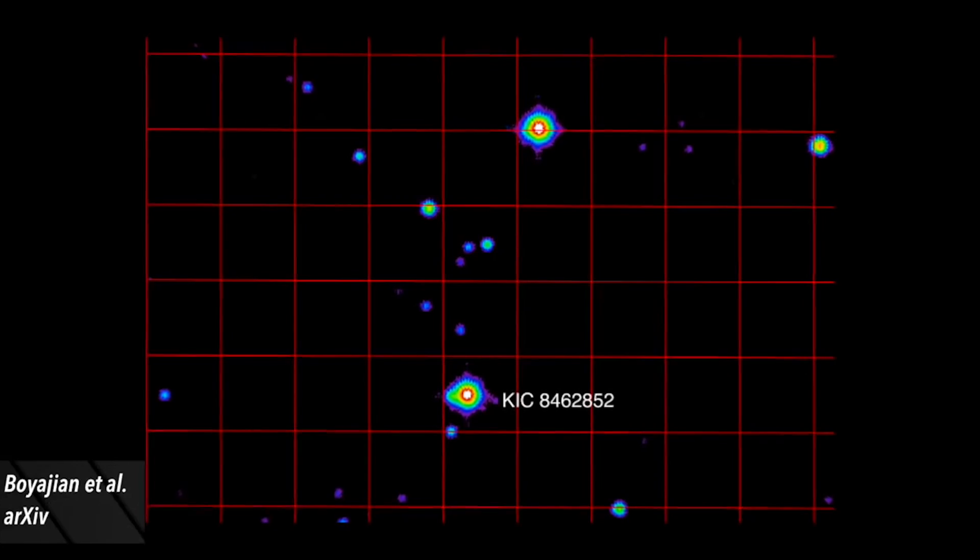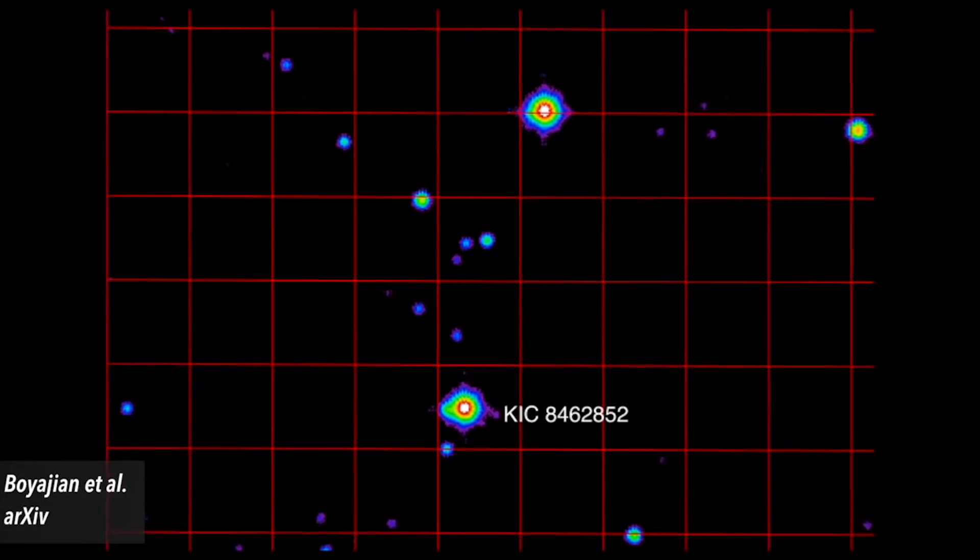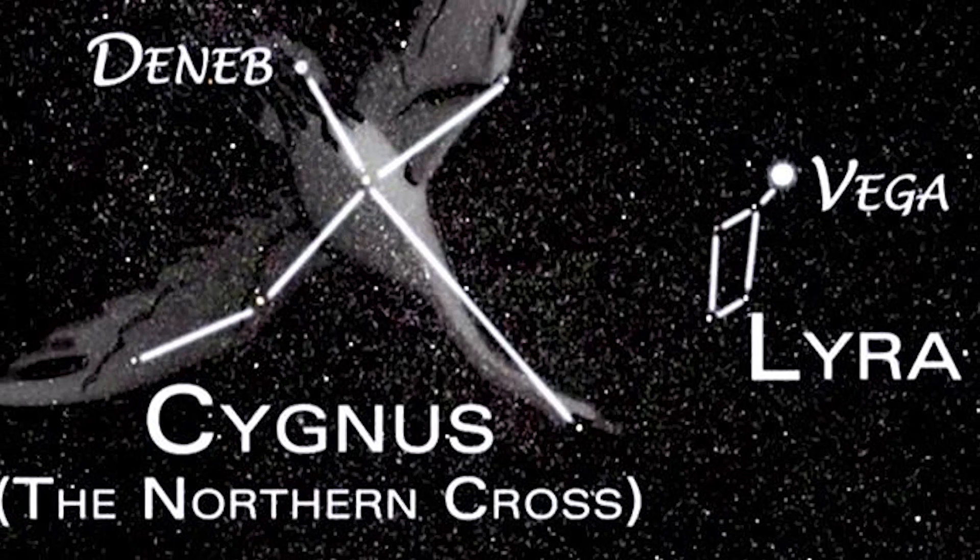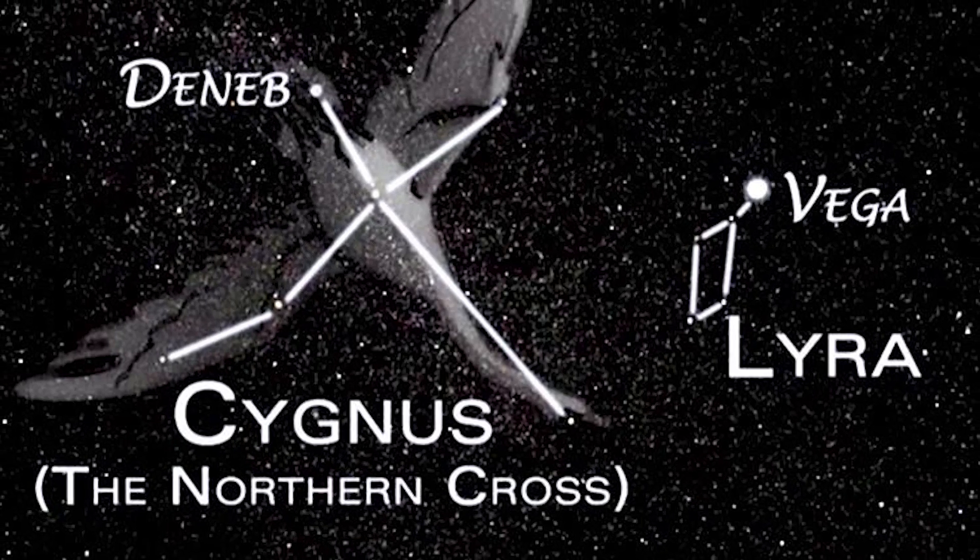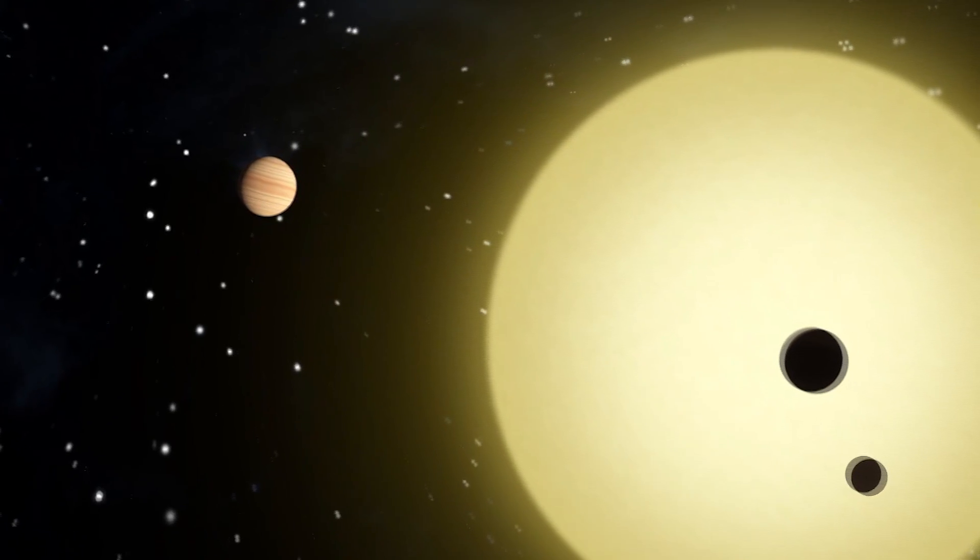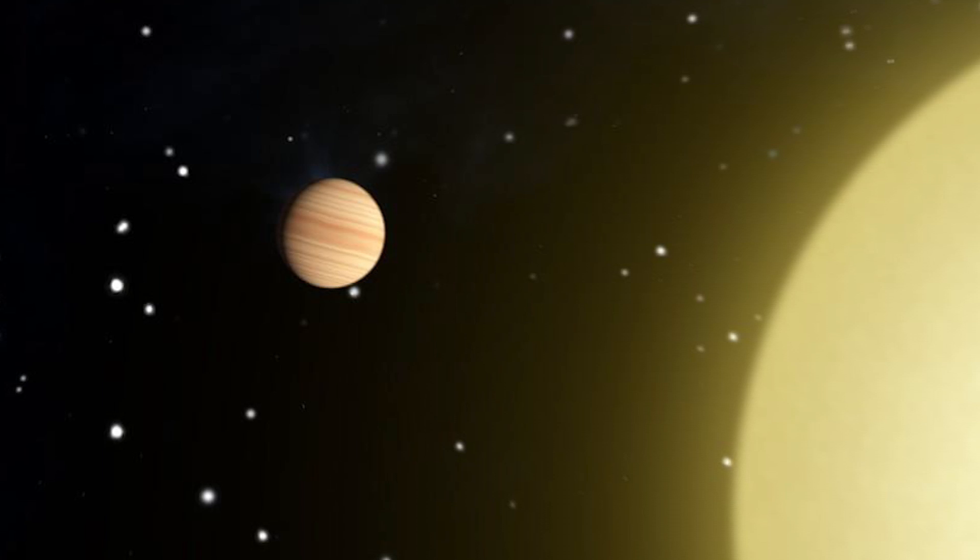The star KIC 8462852 lies just above the Milky Way between the constellations Cygnus and Lyra. It first attracted the attention of astronomers in 2009.